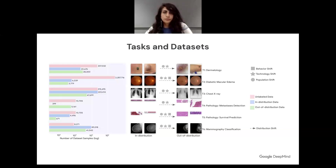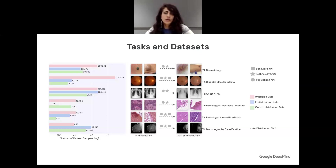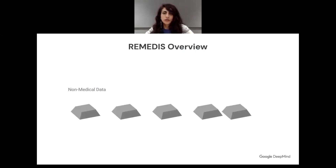We considered multiple imaging modalities and tasks spanning dermatology, retinal imaging, chest X-ray interpretation, pathology, and mammography. In each setting, we have different ratios of unlabeled data, in-distribution data, and out-of-distribution datasets collected from different clinical settings. What we encounter in each imaging task is a complex combination of distribution shifts, including new technology shift, population shift arising from going to a new state or country, and behavior shift due to workflow changes.